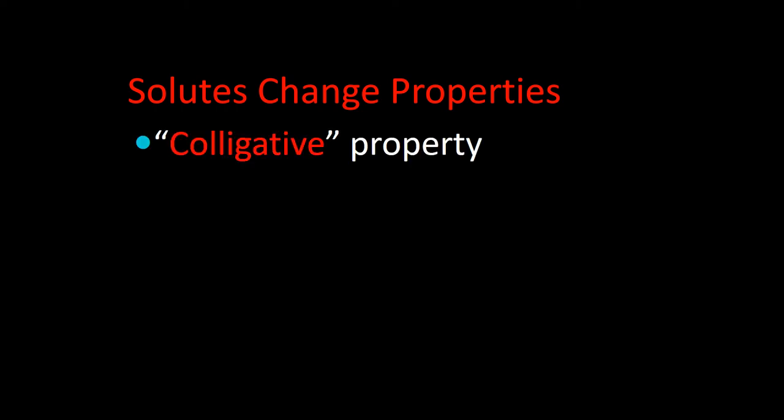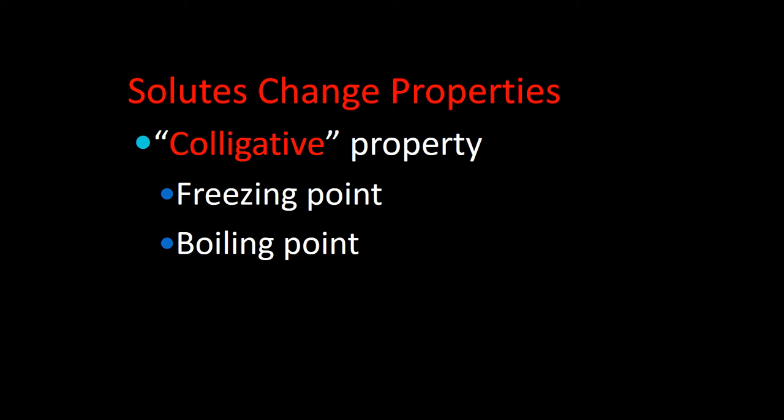The lab is going to look at the freezing point and how it gets affected when you dissolve a solute in it. The name for this is a colligative property — any property that gets changed when you dissolve something in a solvent. The one you're looking at today is freezing point. There are other colligative properties, including boiling point and osmotic pressure, which is important for living cells.